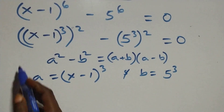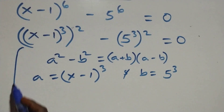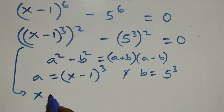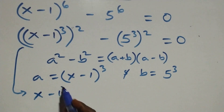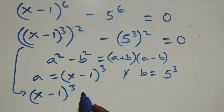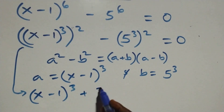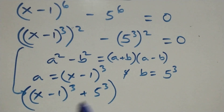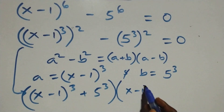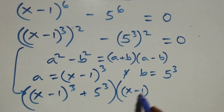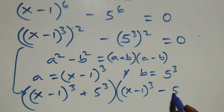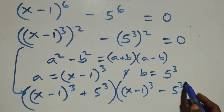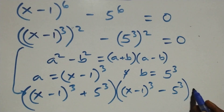What we have here becomes [(x−1)³ + 5³] times [(x−1)³ − 5³] equals to 0.